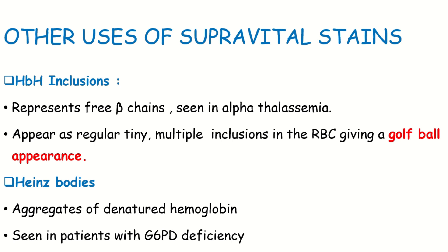One application is demonstrating HBH inclusions - Hemoglobin H inclusions. That is for alpha thalassemia, because it represents free beta chains that precipitate. It is a multiple tiny inclusion site and that will give a golf ball appearance.